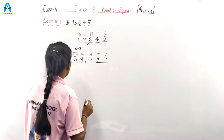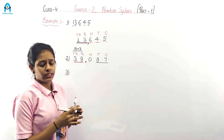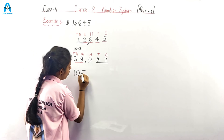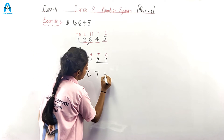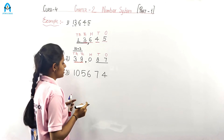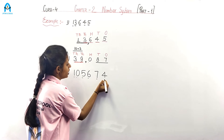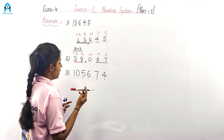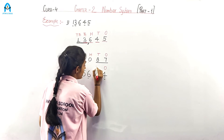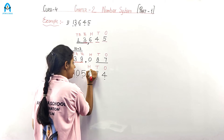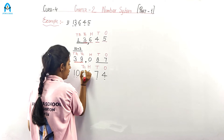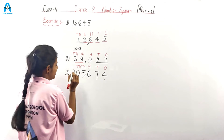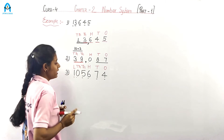Let's take one more example: 1, 0, 5, 6, 7, 4. How many digits? One, two, three, four, five, six — this is a six-digit number. Let's write the place values: ones, tens, hundreds, thousands, ten thousands, and then — this place is called lakh.